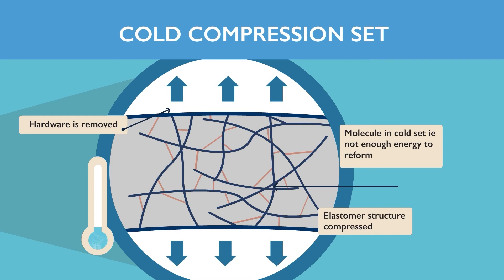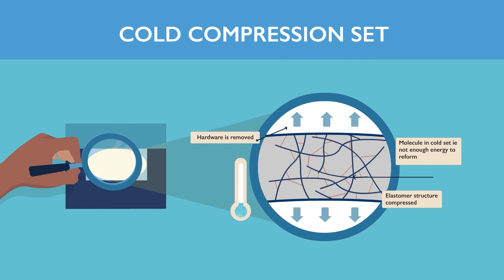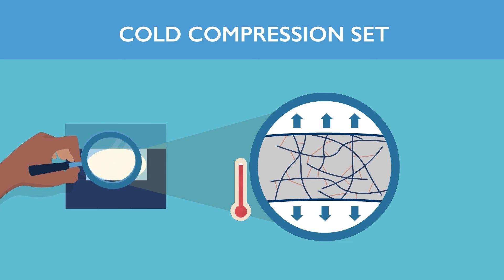If the temperature is too cold, the energy required for the molecules to move back to their original shape isn't there and the elastomer will freeze in a cold set. If and when the temperature rises again, heat energy is returned to the system and the molecules are now able to reform, making elastomer recovery possible.